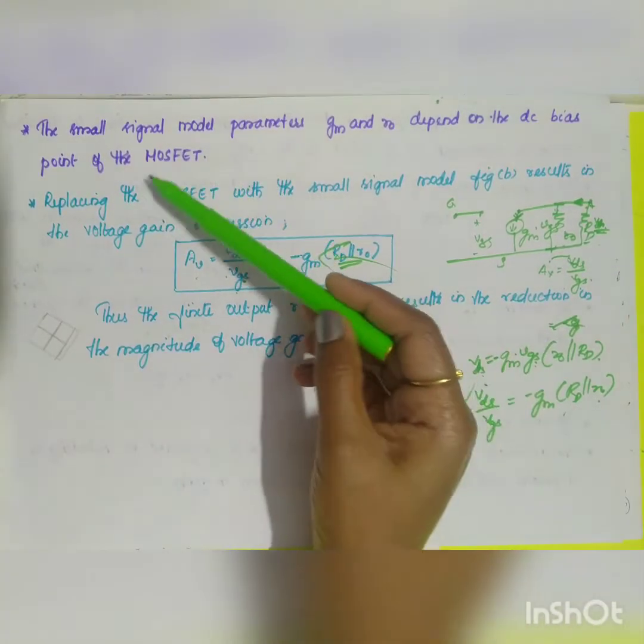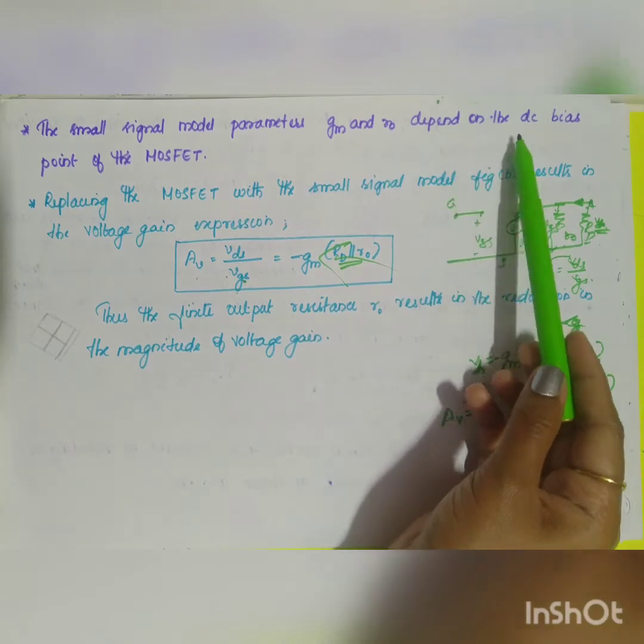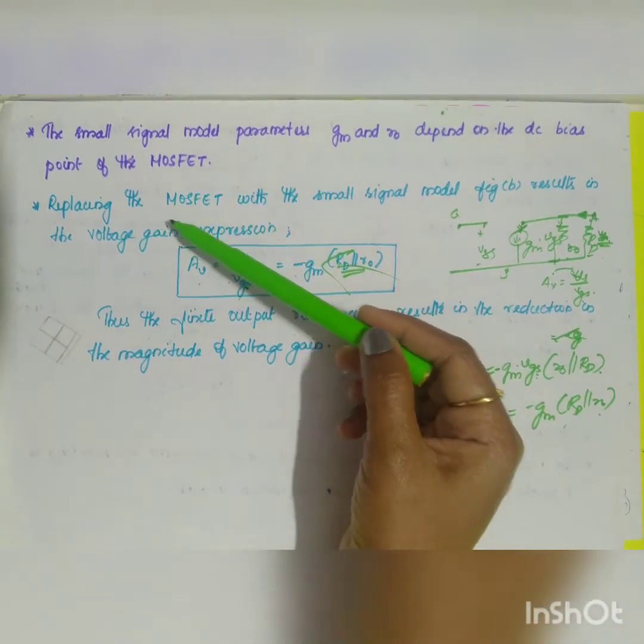What will be your gain? Before gain, the small signal model parameters GM and R naught depend on the DC bias point of the MOSFET.